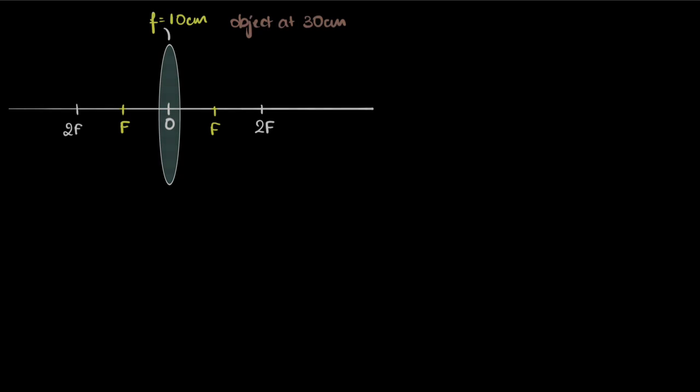Let's see how to draw ray diagrams for convex lenses. Imagine we have a convex lens of focal length 10 centimeters and there's an object kept at 30 centimeters. I want to know where the image is going to be, what its nature is going to be. How do we figure this out?